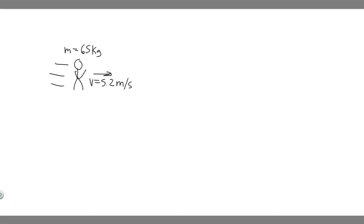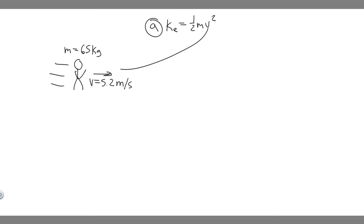I went ahead and drew this — we have the runner, mass is 65 kilograms, moving at 5.2 meters per second. For Part A, we're trying to solve for the kinetic energy at this instant. The formula for kinetic energy, KE, is 0.5 mv squared. So we just plug in the mass and velocity at that instant and solve for KE.